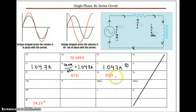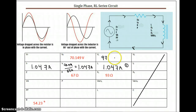Step two: we have an inductive reactance of 93 Ω and a current of 1.047 A, so we find the inductive voltage: 93 Ω × 1.047 A = 97.371 V.